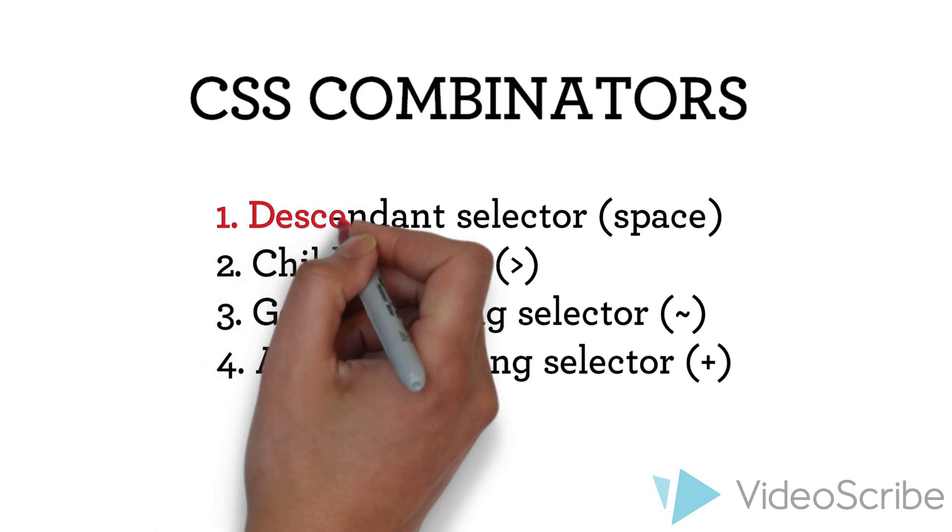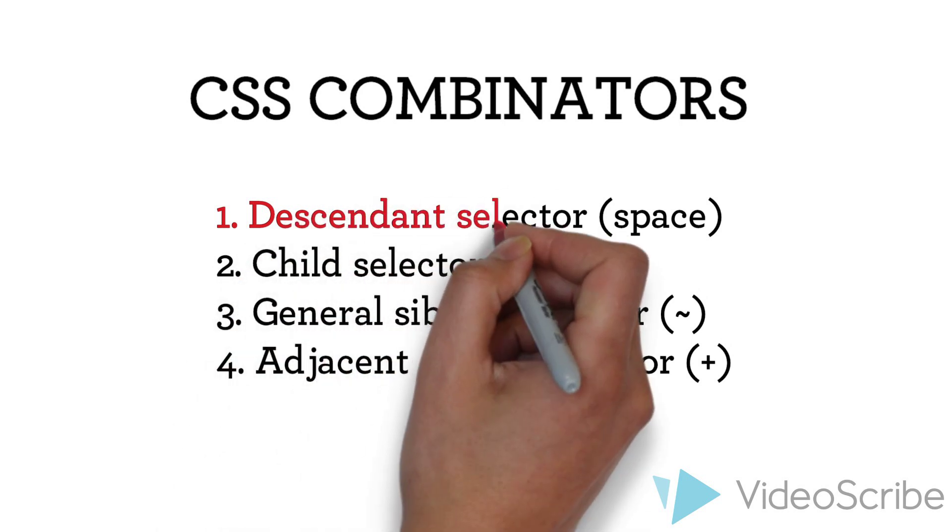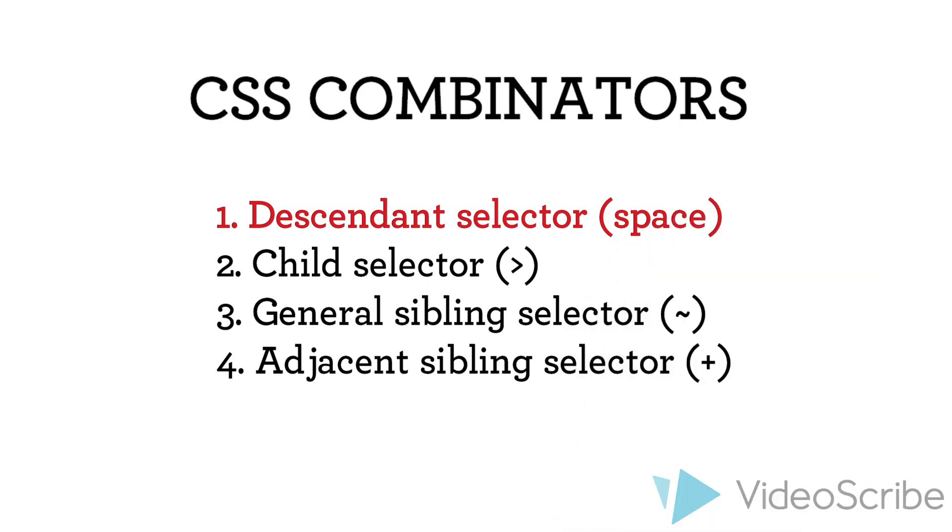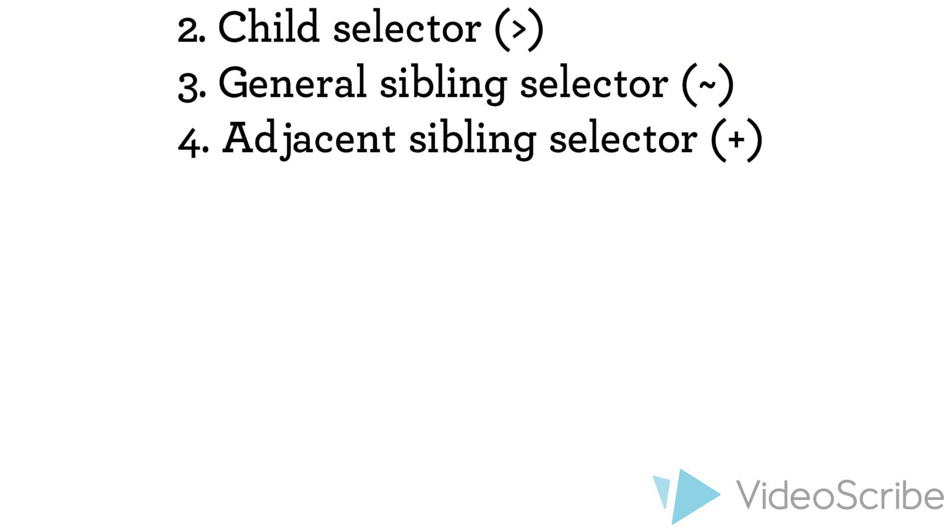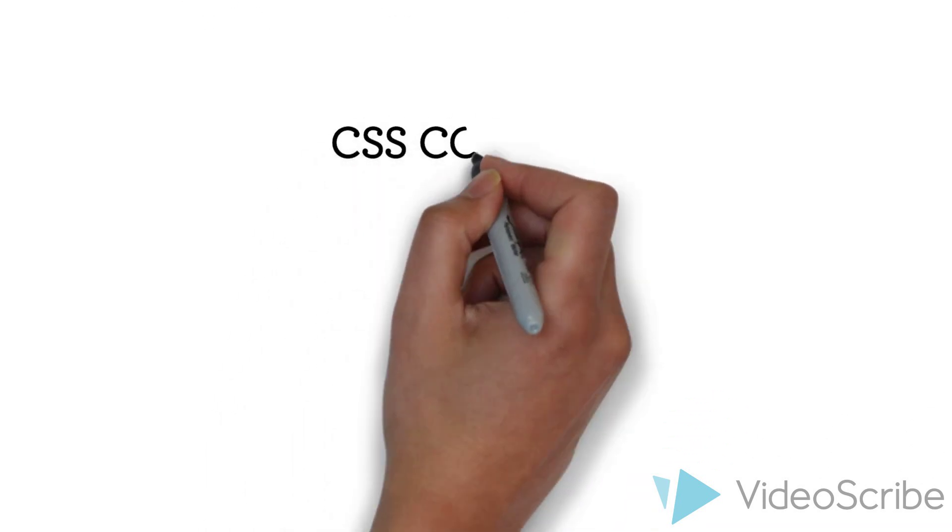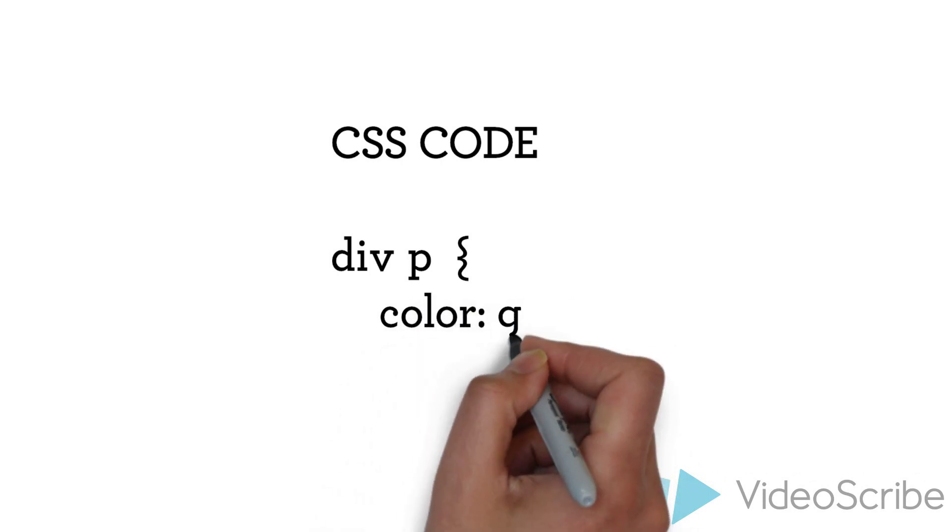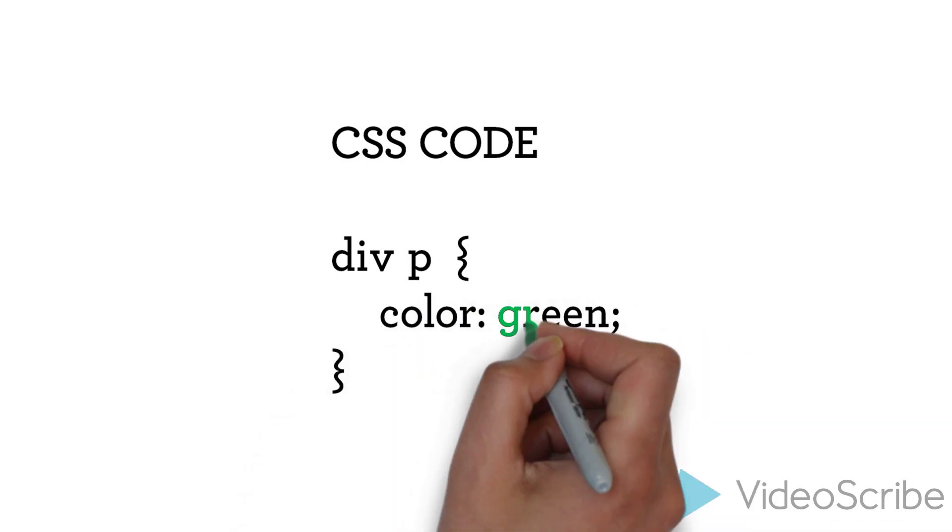The descendant selector. The descendant selector is simply represented by a space. As the name already hints, it selects all descendants of a certain type. So as an example, you could use div space p. And we want to change the color of our selection to green.